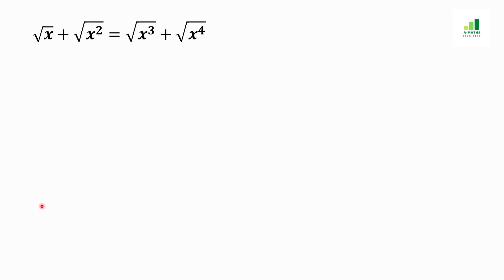Welcome to AMS. Today in this video we will solve a radical equation. This equation looks very complicated, but you will see how easy it is by using the simplification method. Our given question is: under root x plus under root x squared equals under root x cubed plus under root x to the fourth.